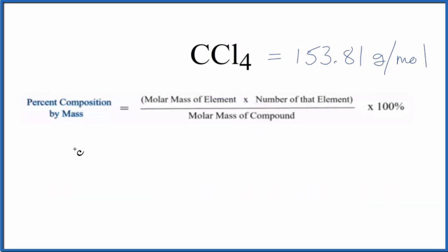Now we're going to work with each element. Let's start with carbon. When we look that up on the periodic table, it has an atomic mass of 12.01 grams per mole. We'll divide that by the molar mass for the compound, 153.81 grams per mole.